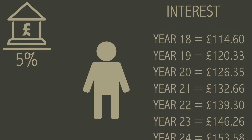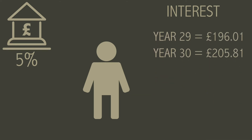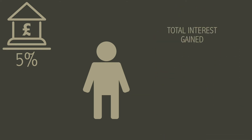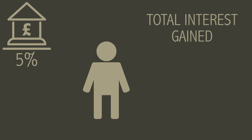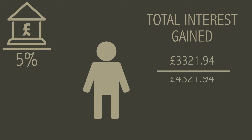If you left this for 30 years and never deposited or withdrew any money, your total interest gained would be £3,321.94, bringing your total to £4,321.94.